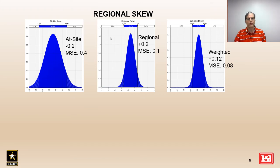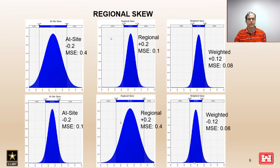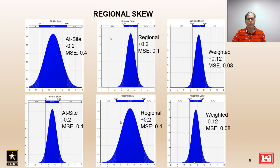If we switch the uncertainty we can see the effect moves in the other direction. In the second example we have the same at-site and regional skew estimates, but now the regional skew has the larger mean square error of 0.4 and the at-site estimate has the smaller mean square error of 0.1. Applying the weighted skew equation, we get a weighted skew parameter closest to the at-site value — the value with less uncertainty — and that weighted value is minus 0.12.